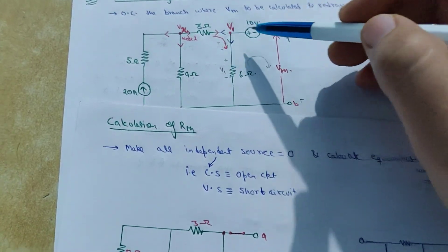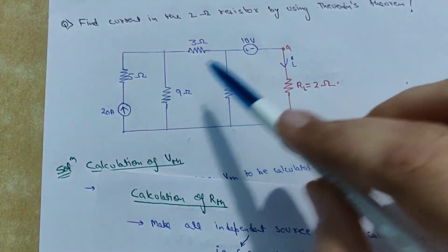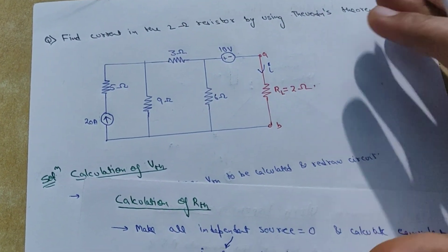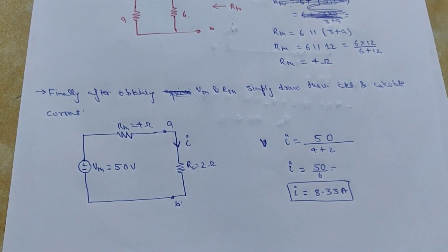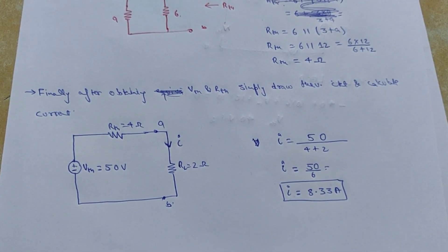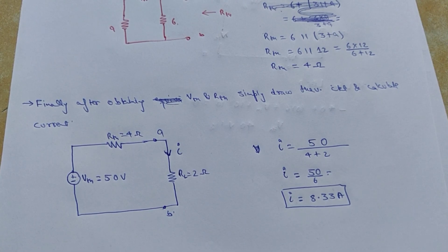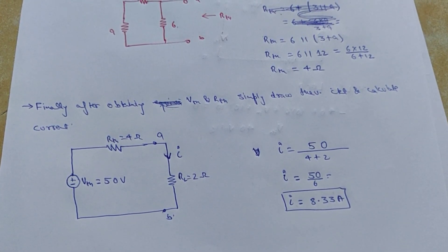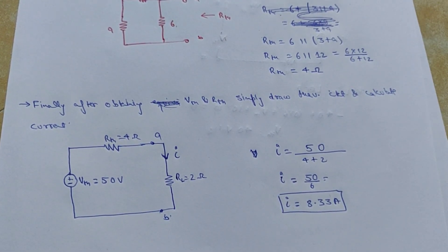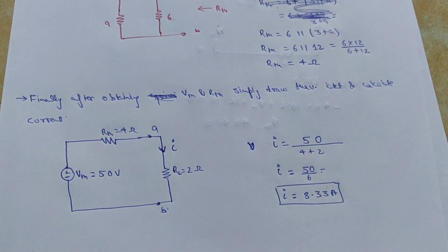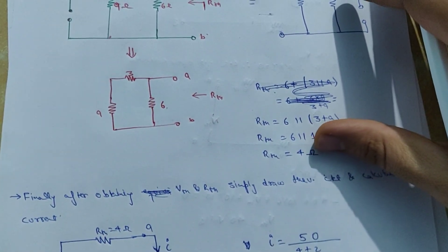We could have calculated I directly using nodal and mesh analysis in the original circuit, but it was asked using Thevenin theorem, which is why we used it. Thevenin theorem is very helpful in complex networks. If you liked the video, do share, like, comment, and subscribe to the channel. Also, there is a PDF in the description with very good notes on Thevenin theorem and practice questions — read pages around 125 to 140. Thank you guys for watching.